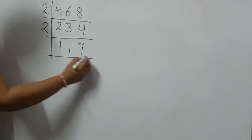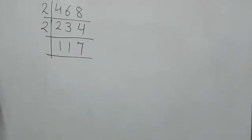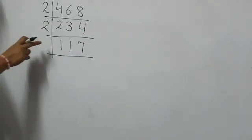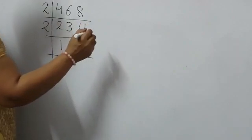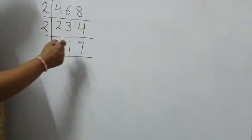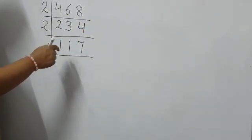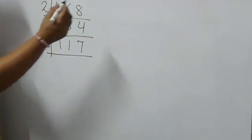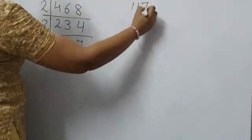Now 117 is an odd number. Now by divisibility test, we will see which number the given number is divisible by. First we check the divisibility of 3.